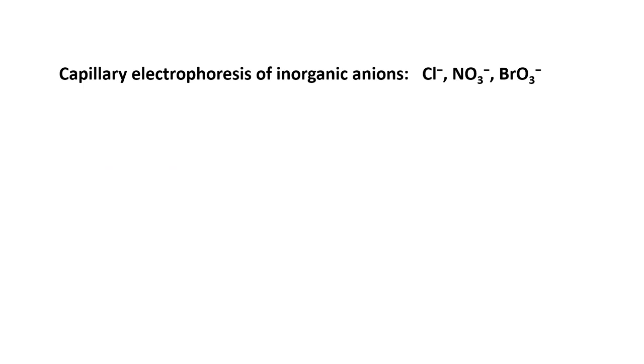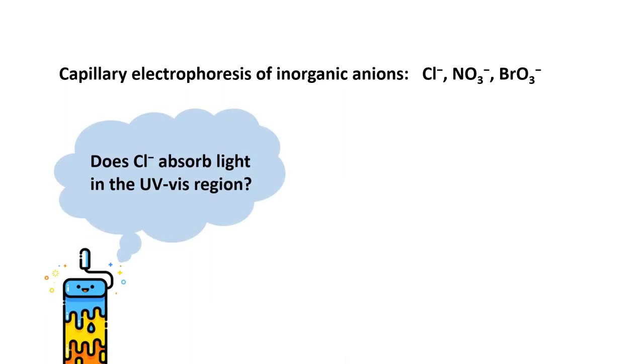The three inorganic anions of interest in this experiment are chloride, nitrate, and bromide. If we are using DAD detector, the first criteria is that our analytes have to be able to absorb light in the UV-Vis region. But do these three anions absorb light in the UV-Vis region?